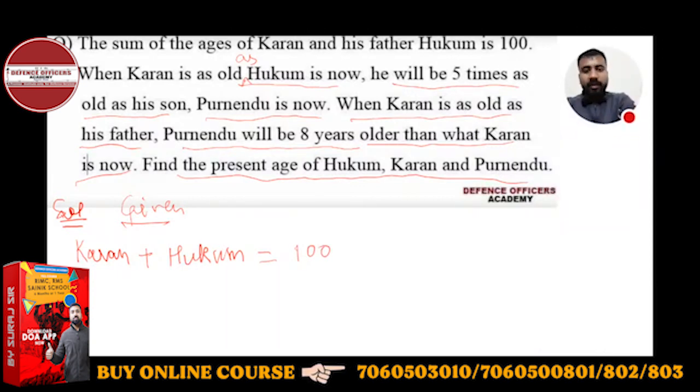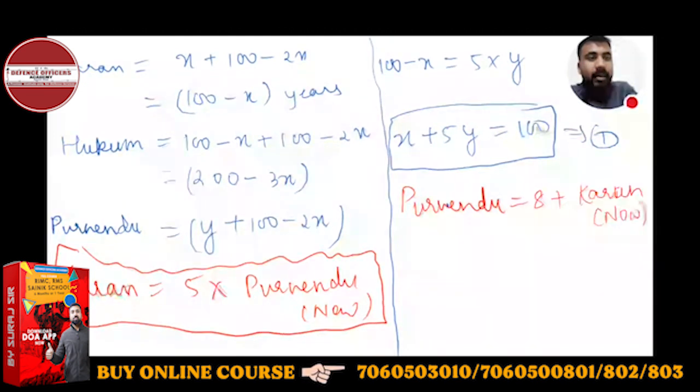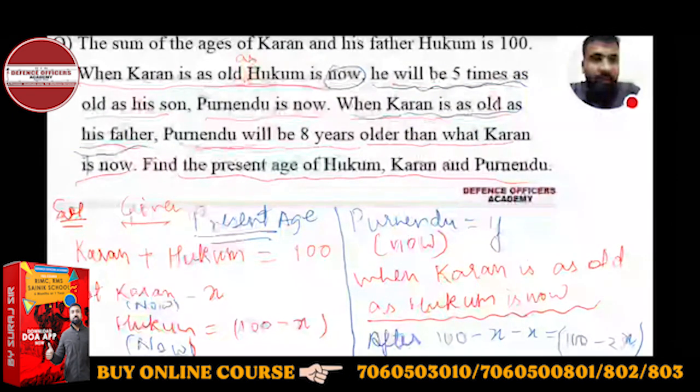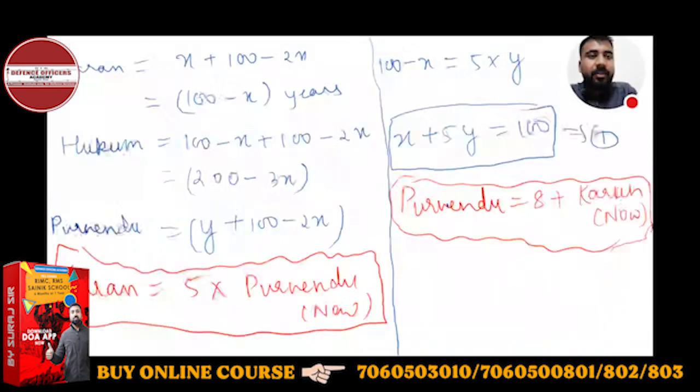Let Karan equal X. I want Karan and Hukum as variables in two years. The second important thing—Purnindu will be eight years older than Karan is now. Karan now is X, so Purnindu is Y.